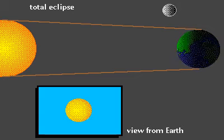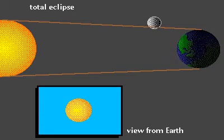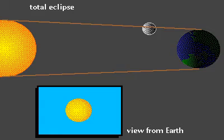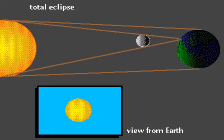An eclipse occurs when a celestial body moves in front of another, cutting off the view from an observer. A solar eclipse, seen here in this animation, happens when the moon passes between the sun and the earth.